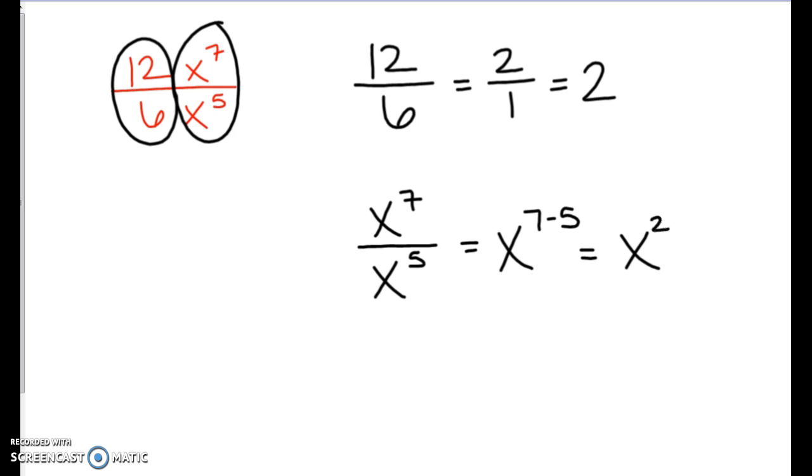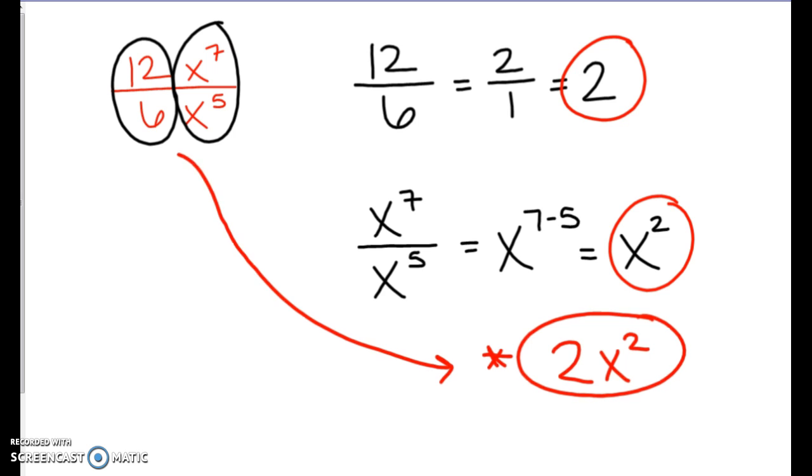And then all we do is combine these two together. So we put 2 times x to the 2nd. So that ends up being our final answer. It's a simplified version from what we had at the beginning.